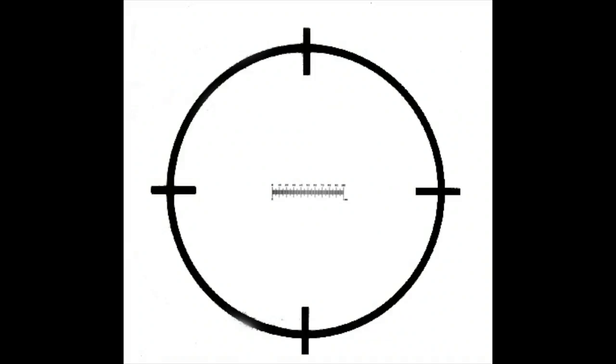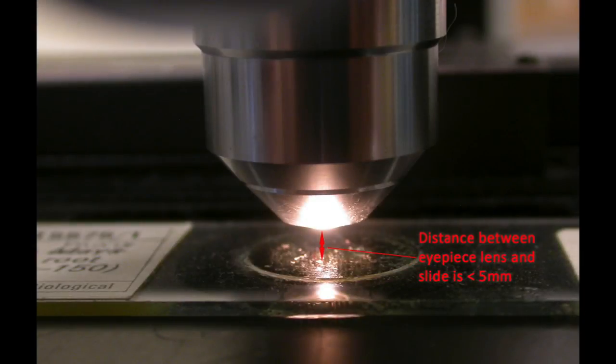Select your 10x objective and then look down the eyepieces, not before. For the 10x objective, the distance between the surface of the slide and the tip of the objective lens is less than 5mm as seen here.